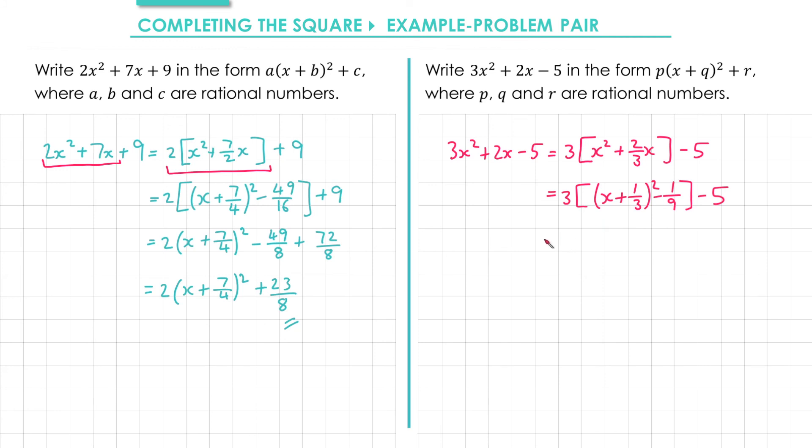Next we expand the square brackets. 3 times minus 1 ninth gives me minus 1 third. And then I'll write the minus 5 in thirds. That gives me minus 15 thirds.